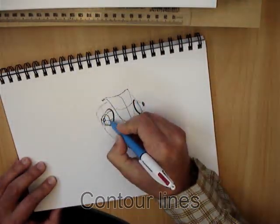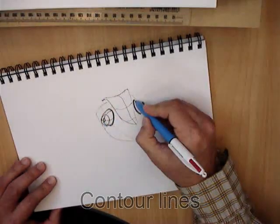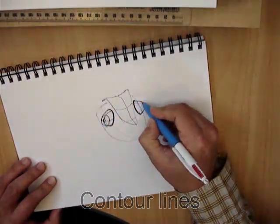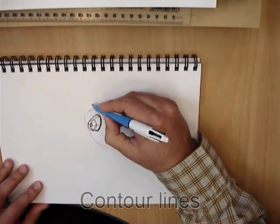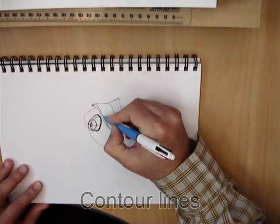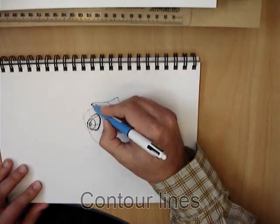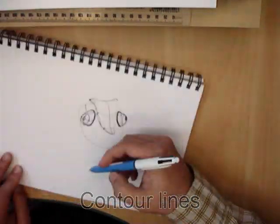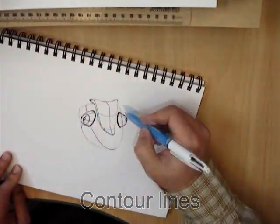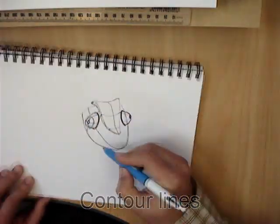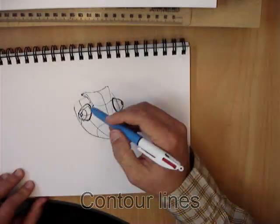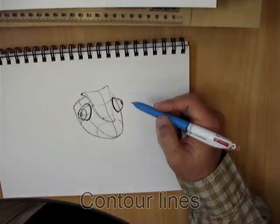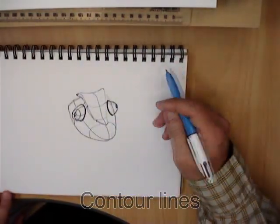And so we're continuing on here, starting to darken in some areas to show some light and dark shading, but notice that I'm not actually using shading as such, I'm just using lines, hence the idea of contour lines. So the lines that swerve over the surface are helping to generate the form.